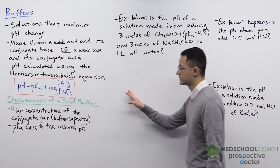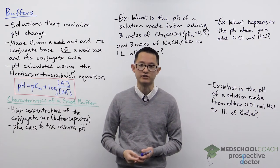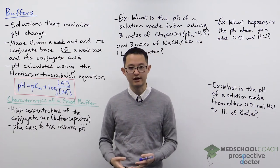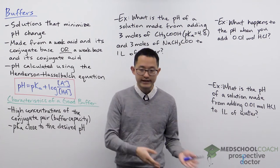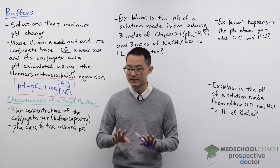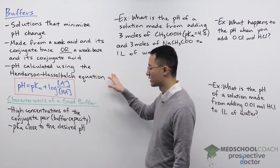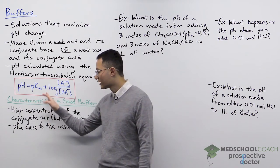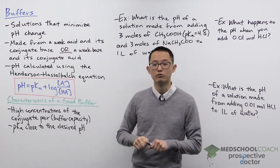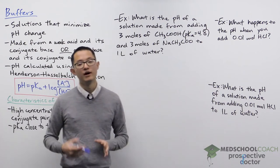This buffer solution is different from what we looked at before. Previously, when we were looking at pH calculations, we were looking at just having a strong acid, a weak acid, a strong base, or a weak base in solution by itself. This time, we're looking at having a weak acid and its conjugate base, or a weak base plus its conjugate acid in solution. So this is a different case, and the pH calculation is also different. We can do the calculation using the Henderson-Hasselbalch equation: pH equals pKa plus log of [A⁻] over [HA], where A⁻ is the concentration of the conjugate base and HA is the concentration of the weak acid.